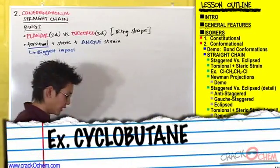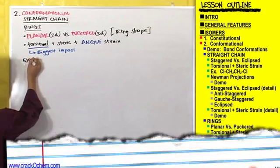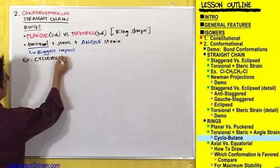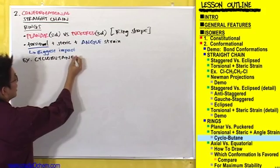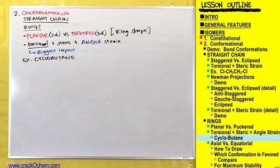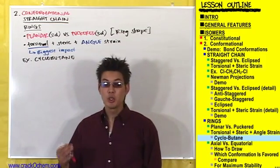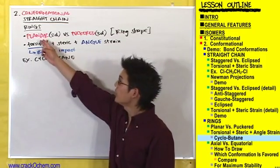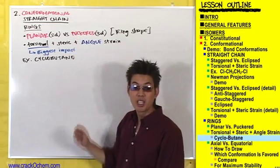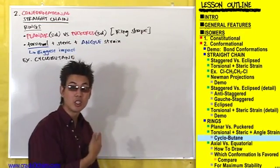Let me give you an example of this. So let's take, for example, cyclobutane. Cyclobutane can either be in a planar 2D conformation or a puckered 3D conformation. And let's see what both of these conformations look like.